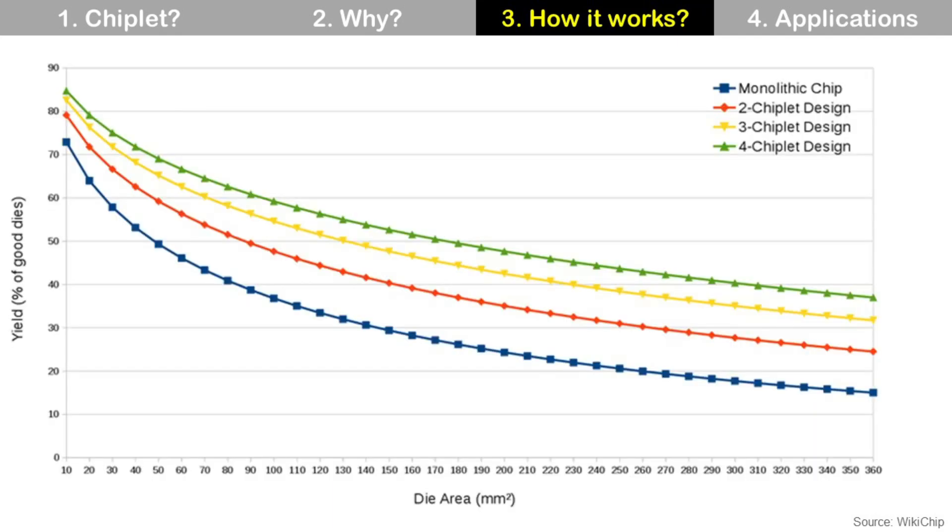This is die yield comparison between one die versus Chiplet with two, three, and four dies. For 360 square millimeter one die will have 15% yield. But a four Chiplet design each 99 square millimeters will have 37% yield more than doubles. Even though the total die area of four Chiplet design is more than 10% than one die, the significant yield improvement of Chiplet is good enough to justify Chiplet solution.